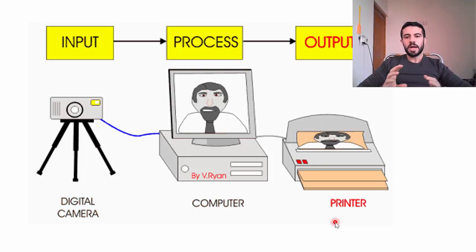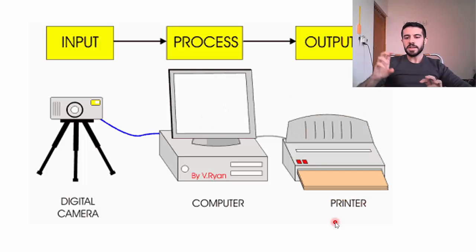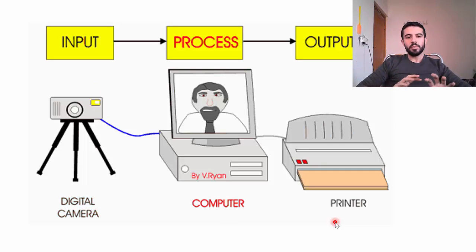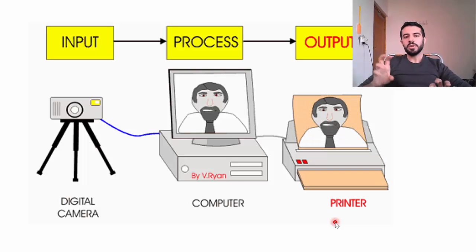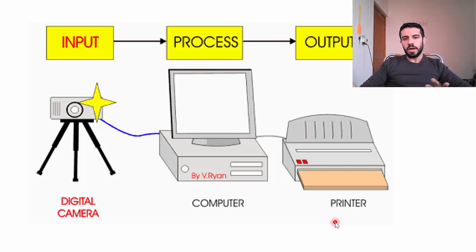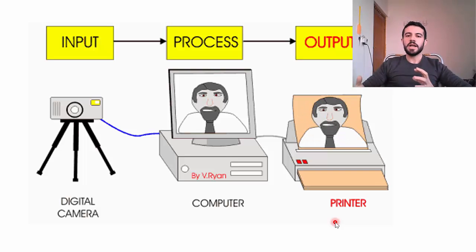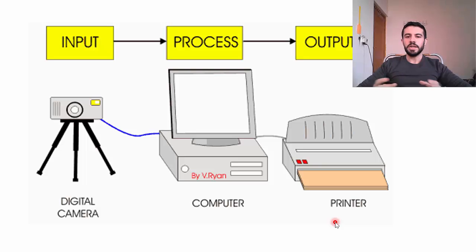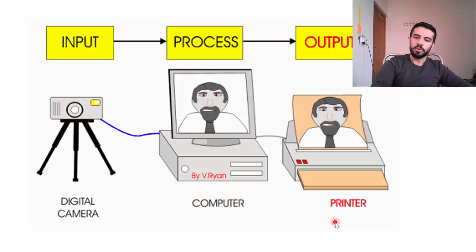We can also consider each device as its own system: the digital camera is a system, the computer is a system, and the printer itself is a system. The output of the camera system becomes the input to the computer, and the output of the computer becomes the input for the printer. Systems can interact with each other — each has input, process, and output.